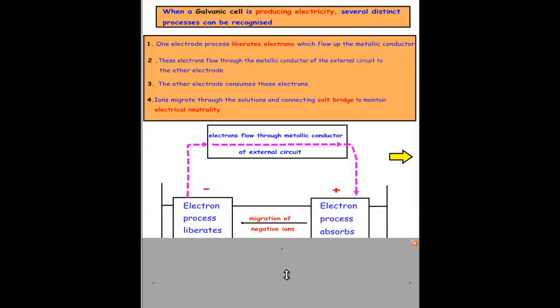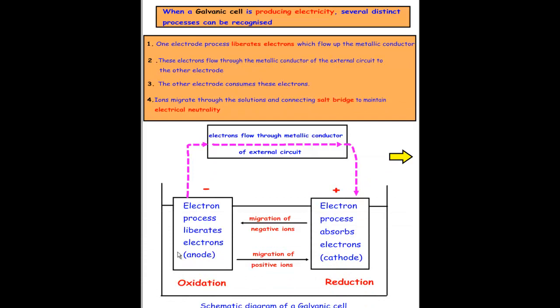When a galvanic cell is producing electricity, several distinct processes can be recognized. The first one is one electrode process liberates electrons which flow up the metallic conductor. Let's have a look at it here. This side here is where oxidation is occurring. So it liberates electrons. They go up the metallic conductor and go to the other side. These electrons flow through the metallic conductor of the external circuit to the other electrode.